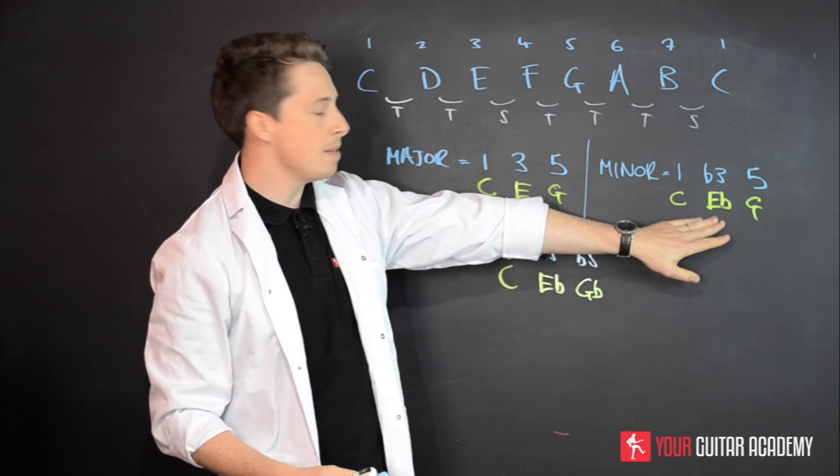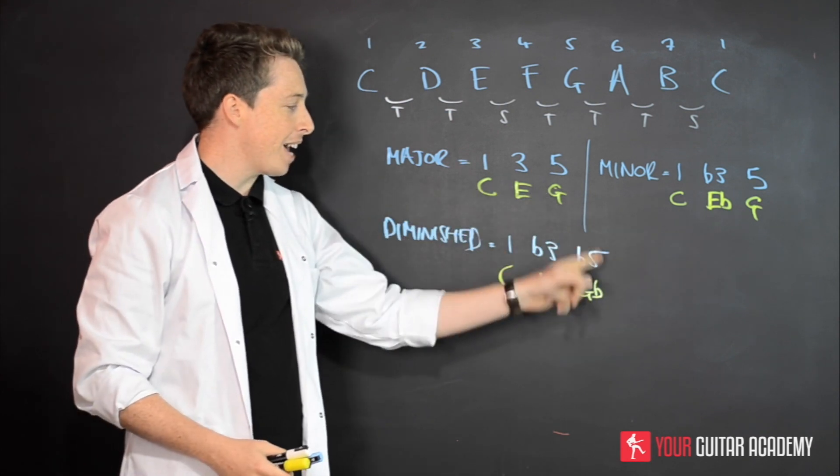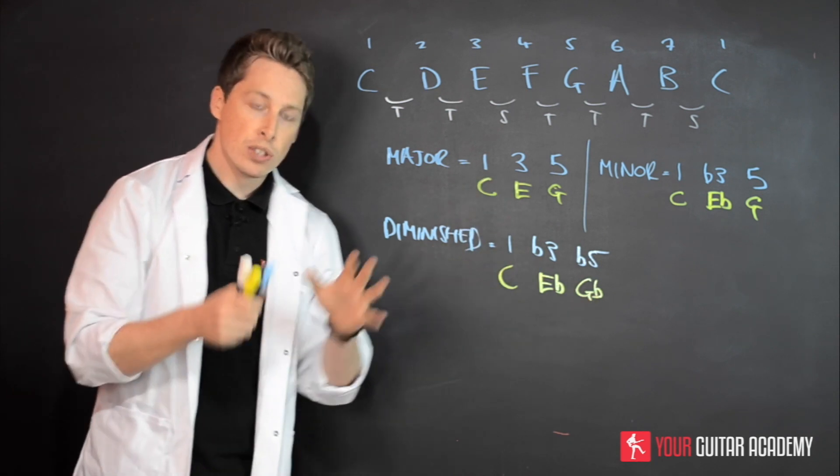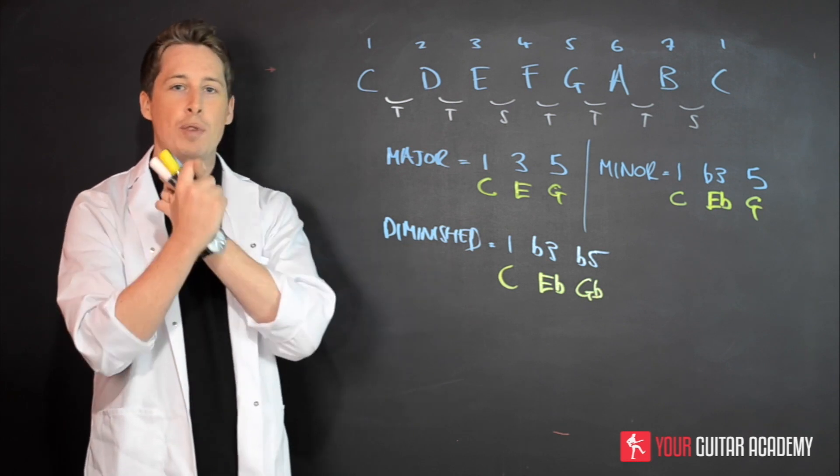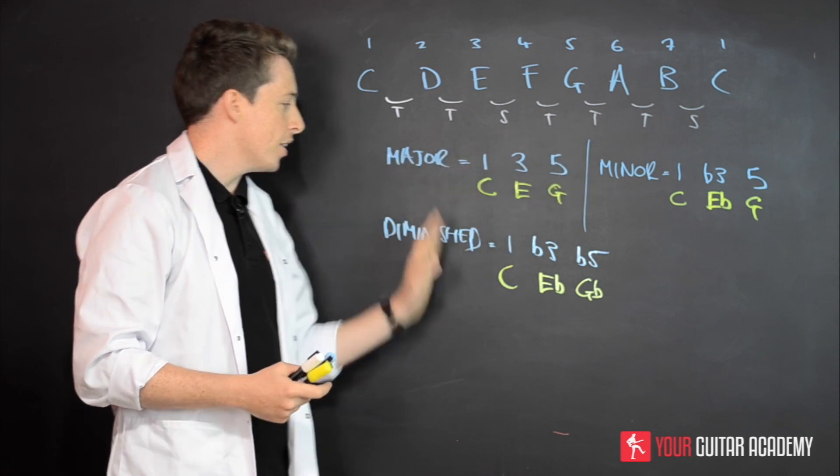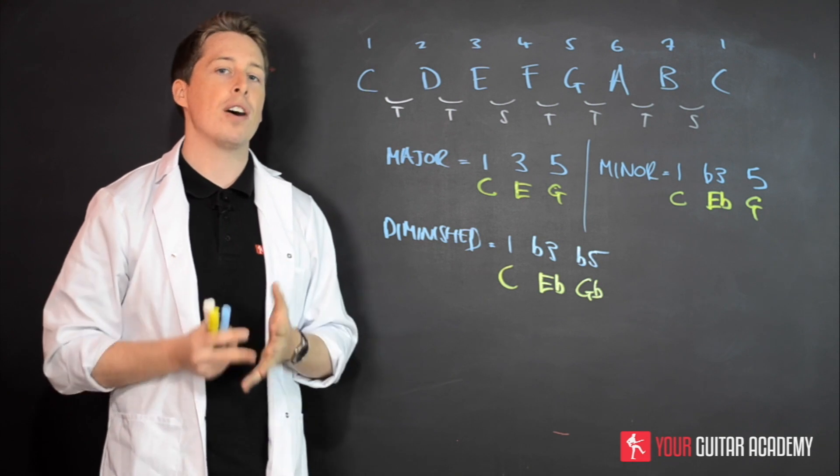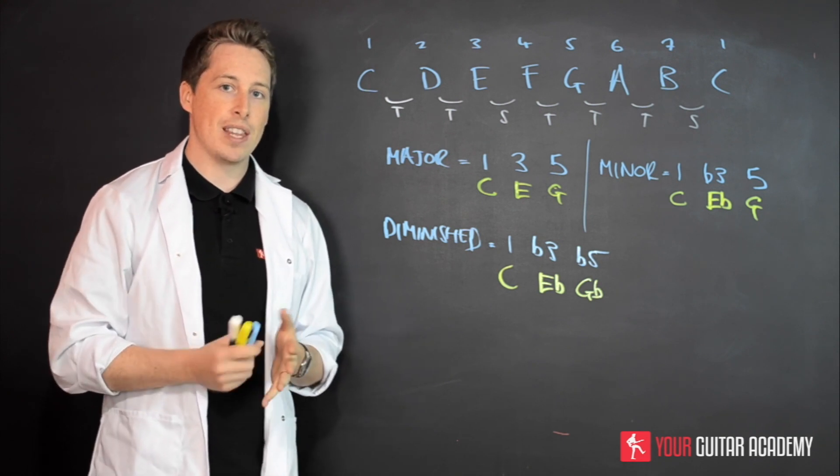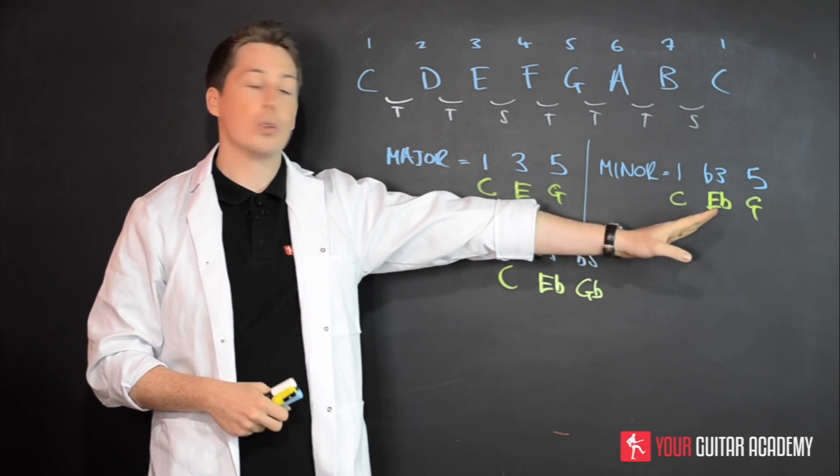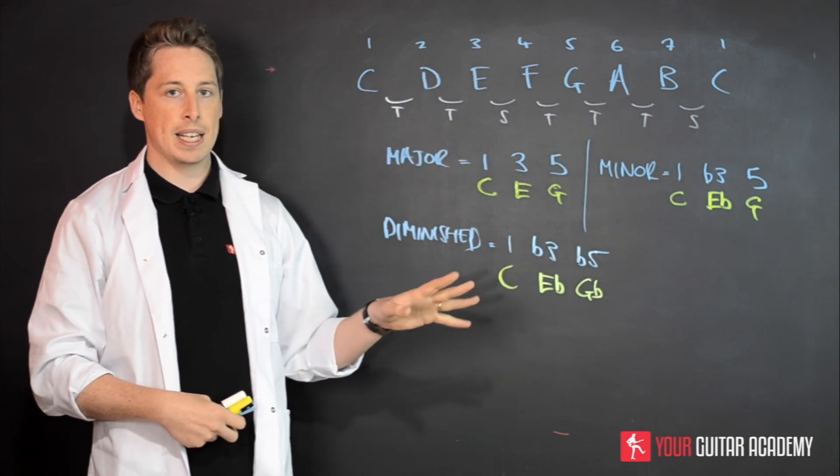It's this flat five here that really defines the sound of a diminished. So the moral of the story here, guys, is that one, you need to remember the formulas. You need to know and memorize the major, the minor, and the diminished formulas. Secondly, you need to understand which parts of that formula really make the difference in that chord. So in the minor, the flat third is the big crucial difference in sound. If you just put the one and the flat third together, you're immediately going to make a minor sound.